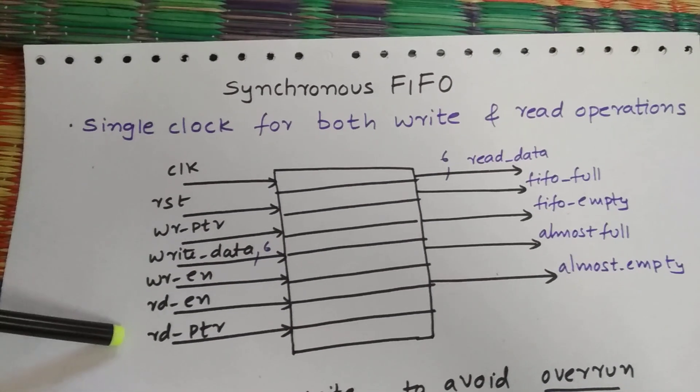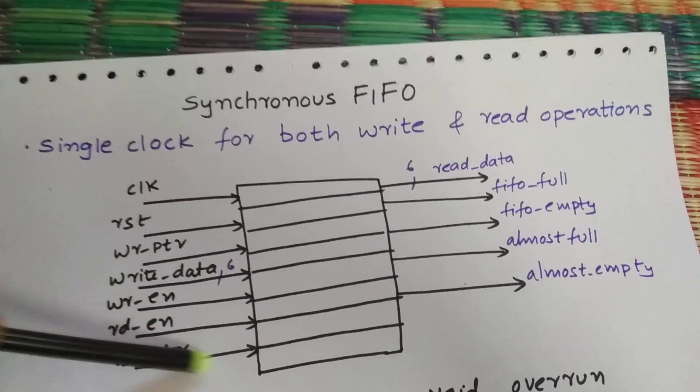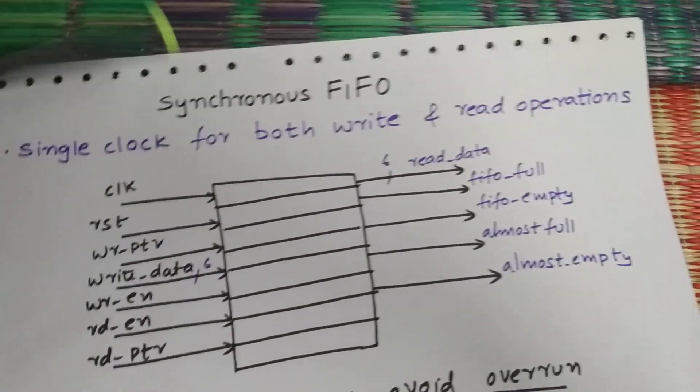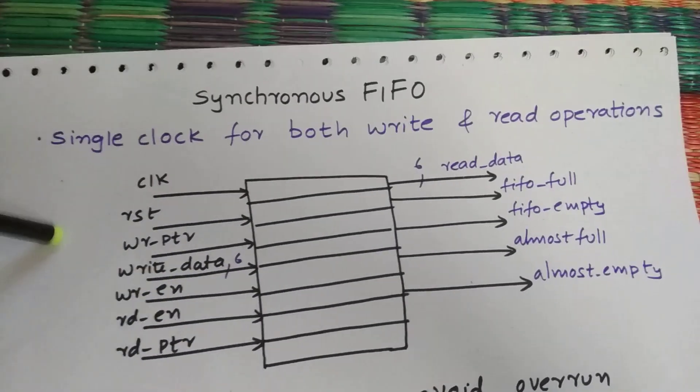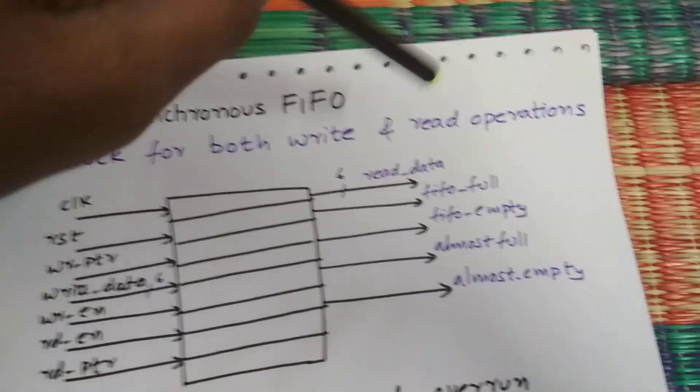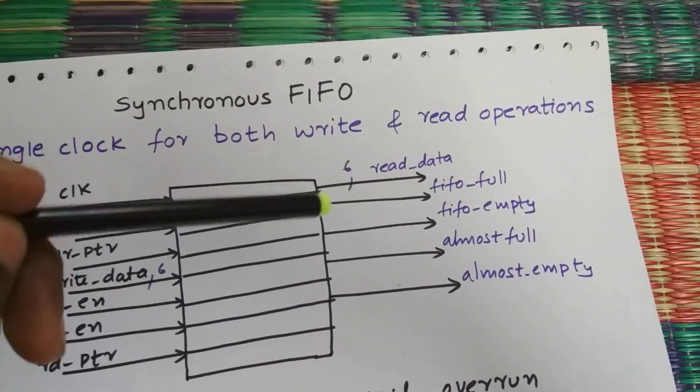Write pointer to check where the reading is happening and read data - getting the output what's in the FIFO. Write data writes into the FIFO. FIFO full and FIFO empty indicates that FIFO is full and FIFO is empty.